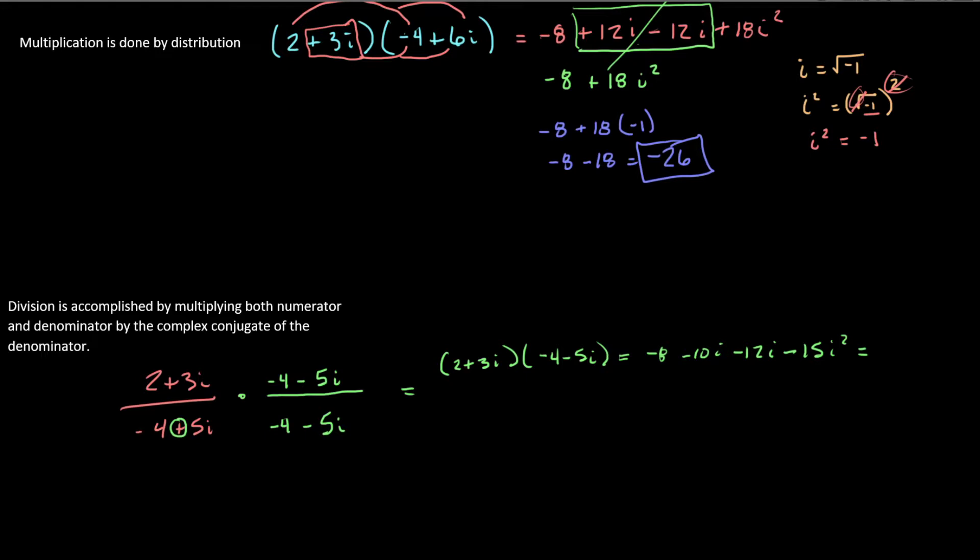If we combine all the like terms, I get negative 8. Now, this is going to be negative 15 times negative 1, just like it was before. Negative 15 times negative 1 is a positive 15, minus 8 is 7, and then I have negative 10 and negative 12 for negative 22i. All right, so that's the top.